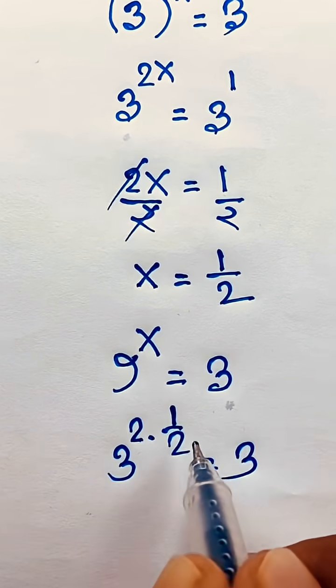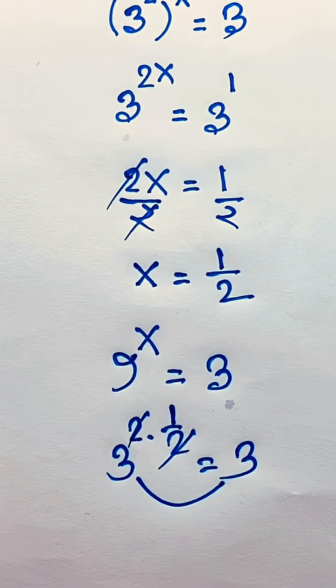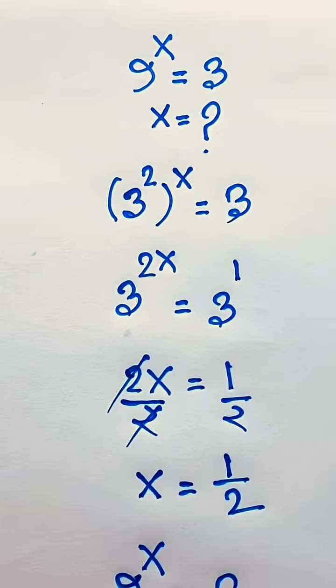Is equal to 3, 2 cancel out, so left hand side and right hand side is equal. So x is equal to half, this is our final answer.